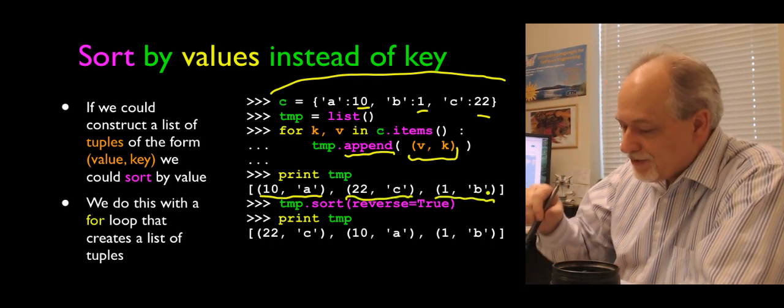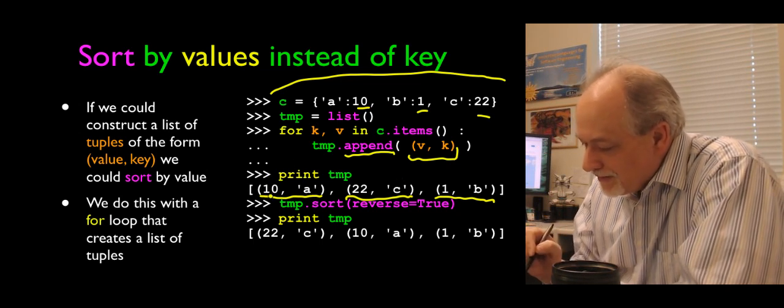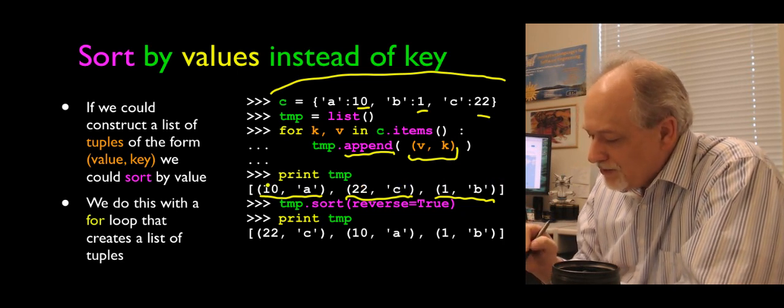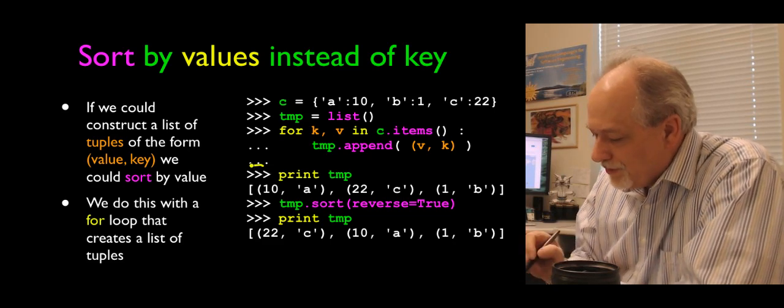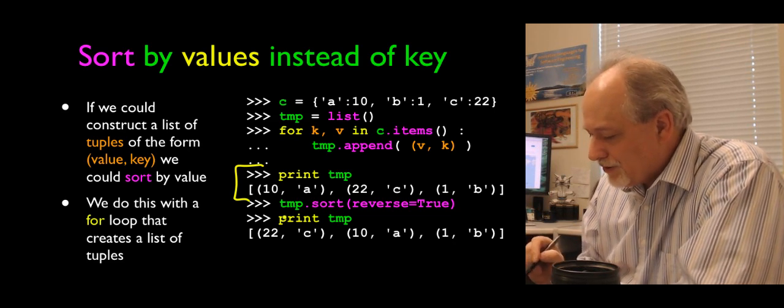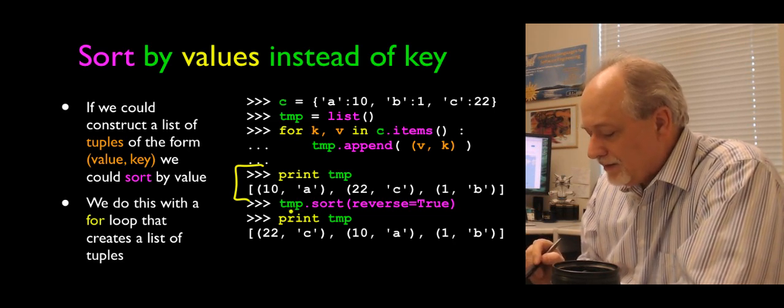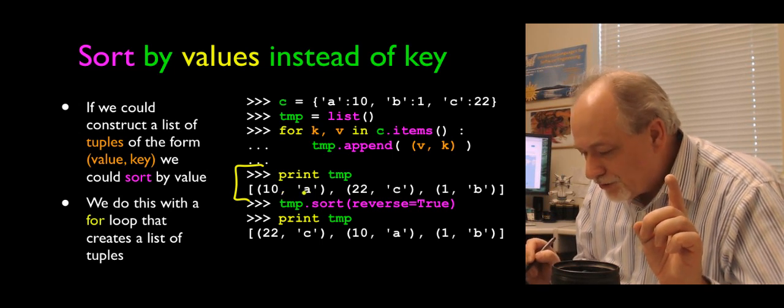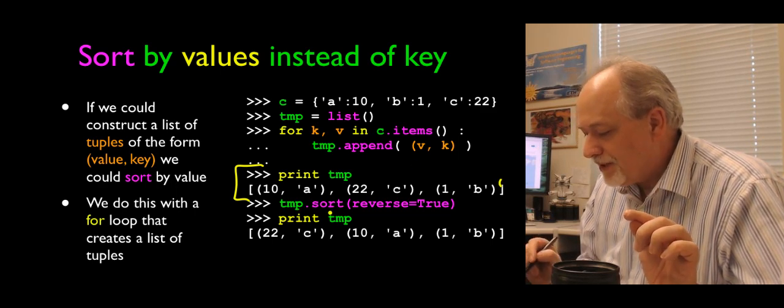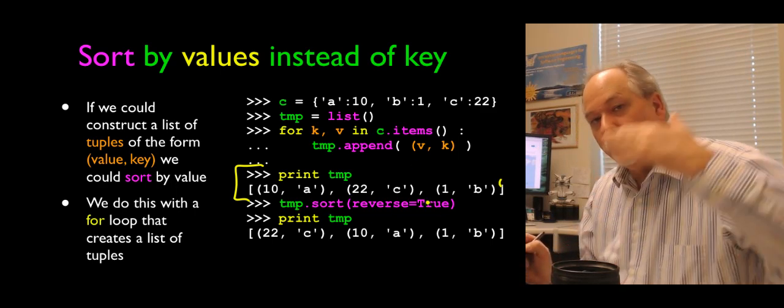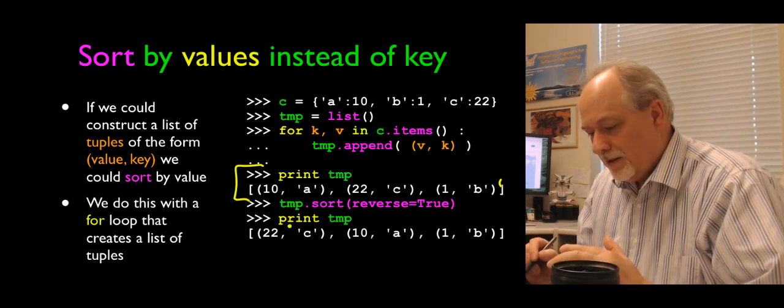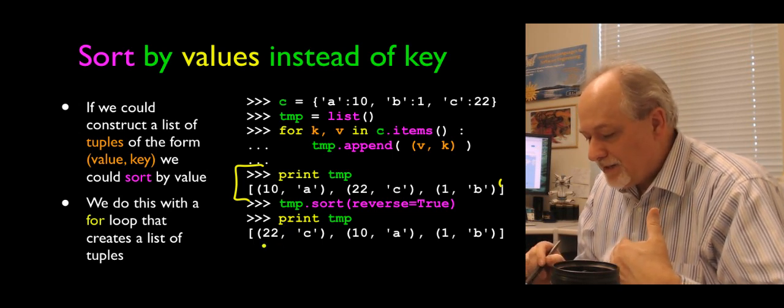And it was simply the opposite order. Each of the tuples now has the value first and the key second. Value first, key second, value first, key second. So this is a bit of temporary data that we've created. Then what we do is we call the sort method. Sort, take this list. Lists are mutable. The individual tuples can't be changed, but the order of the tuples can be changed because they are in a list. temp.sort. And then we're going to say reverse equals true. So we sort from the highest down to the lowest. And now temp has been sorted. And now it is in a new order.